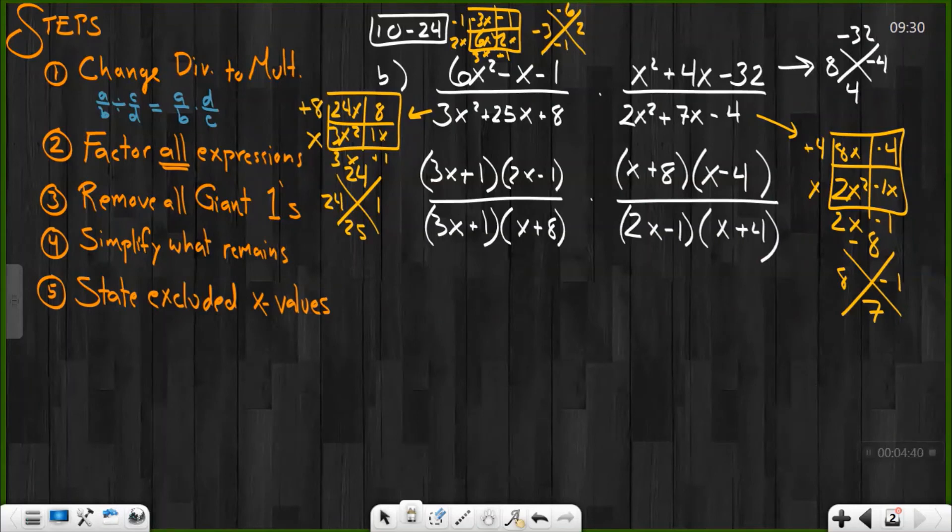All right. Now, at this point, let's look at everything that canceled. 3x plus 1, 3x plus 1, 2x minus 1, and even x plus 8. Do not cancel the x minus 4 and x plus 4. 1 is plus, 1 is minus. They cannot cancel even when I write it out like this. You'd be tempted to, but you're not allowed.